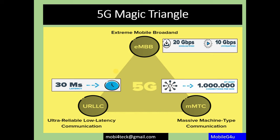The second part is mMTC — massive machine type communication — where many devices integrate with each other, like IoT devices, NB-IoT, and CAT-M. There can be so many connections per square kilometer. Small devices in your bag, electronic gadgets, connected cars in the automobile industry — all are part of this. Different machines talk to each other and send data — that is the mMTC part.